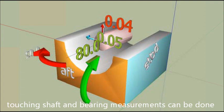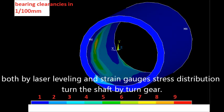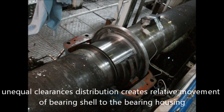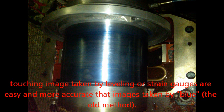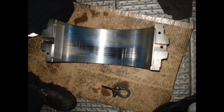Touching shaft and bearing measurements can be done both by laser leveling and strain gauge stress distribution. Turn the shaft by turn gear. Unequal clearance distribution creates relative movement of bearing shell to the bearing housing. Touching images taken by leveling or strain gauges are easy and more accurate than images taken by blue, the old method.